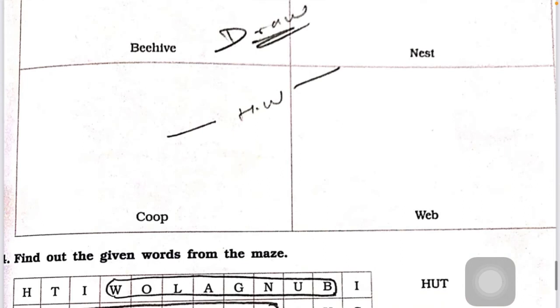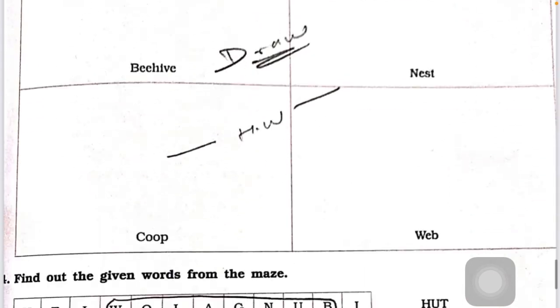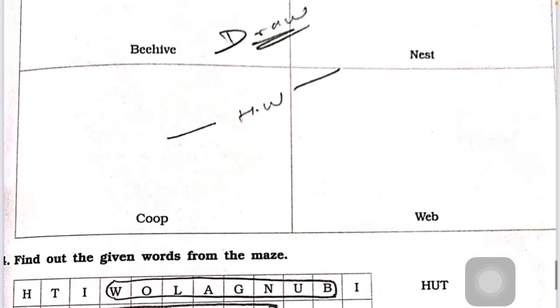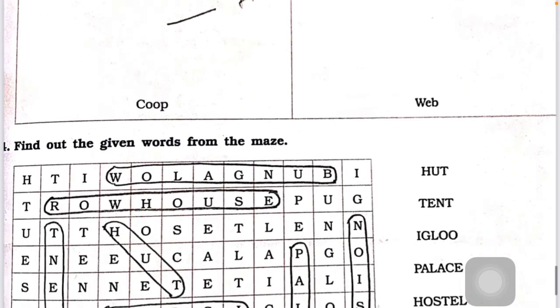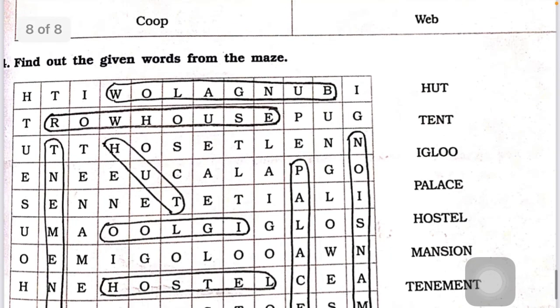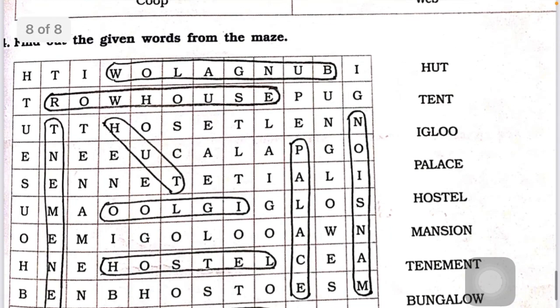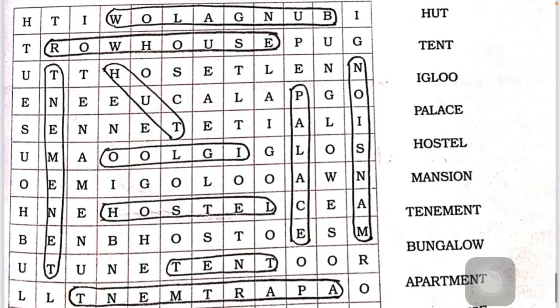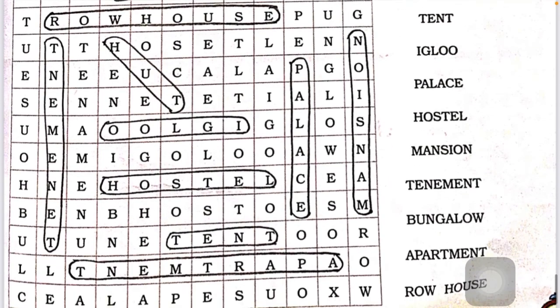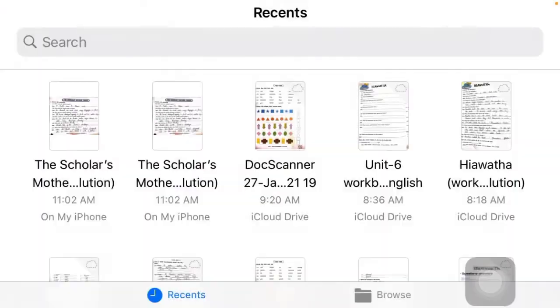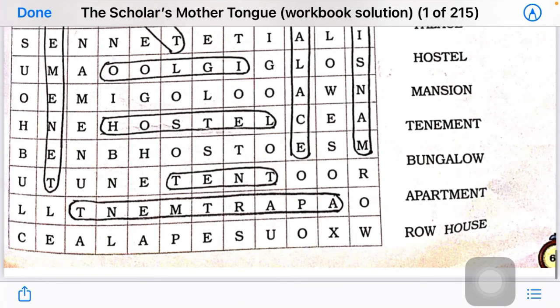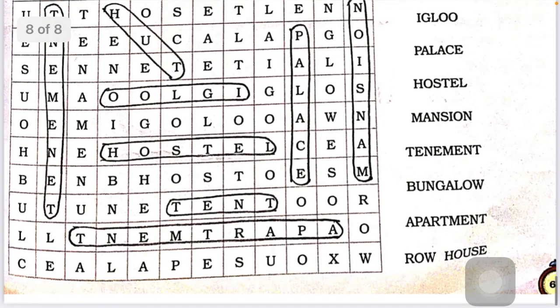Now there is a drawing picture that you have to draw — nest, coop and wave. Find out the given words from the image. These are the words you have to find from here. That is all about the workbook solution of The Scholar's Mother Tongue. Now we are ending here. Bye-bye, take care.